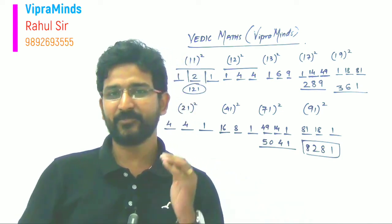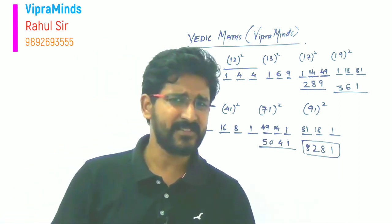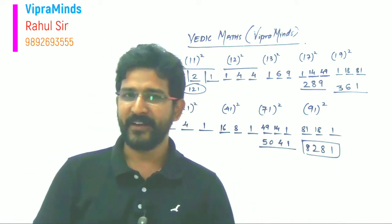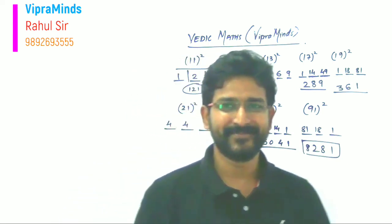So this is how we can calculate these squares of numbers that start with one and end with one in just few seconds with minimum calculation. Hope you have understood and hope it will be helpful for you. Thank you.